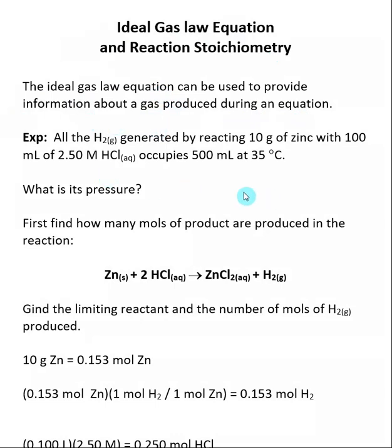Here I give you a reaction between zinc and HCl. I told you that we are producing H2 gas as a product here, and I'm starting with 10 grams of zinc and 100 milliliters of 2.5 molar HCl.